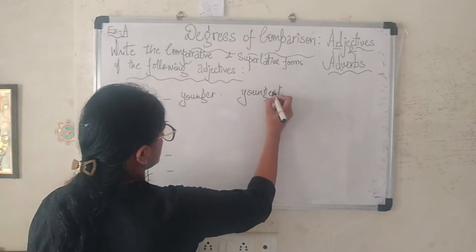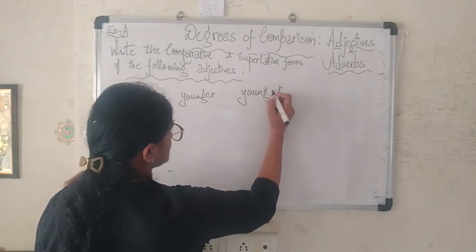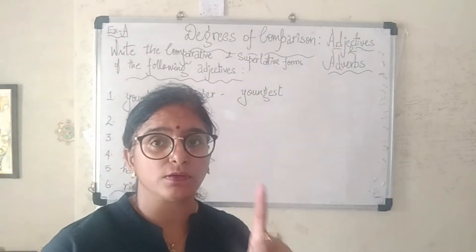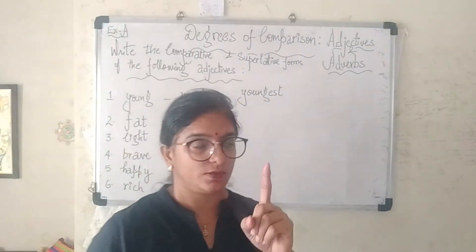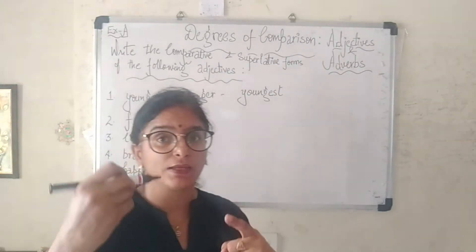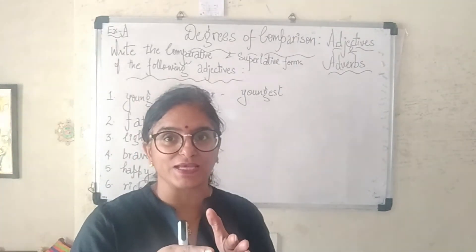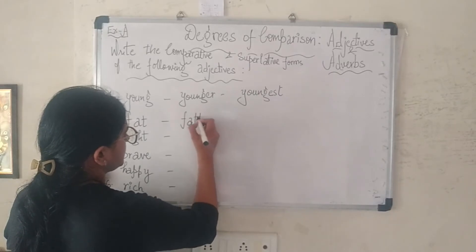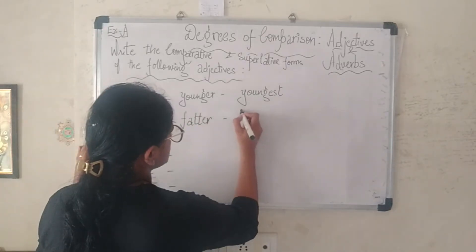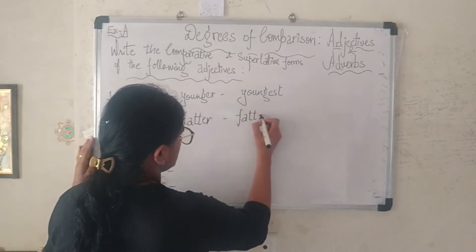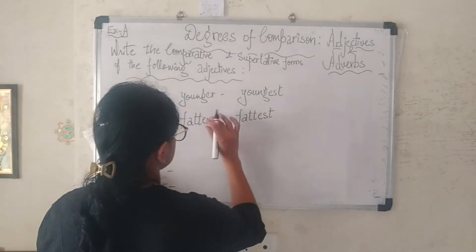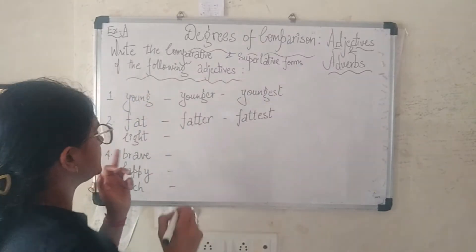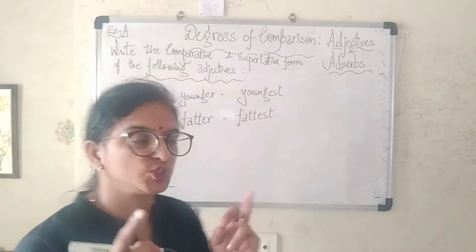The second adjective is 'fat'. Remember, when the last letter is preceded by a vowel — the consonant here is 't' and it's preceded by 'a' — you have to double the last letter. So the spellings will be 'fatter' (f-a-double t-e-r) and the superlative form will be 'fattest' (double t-e-s-t).